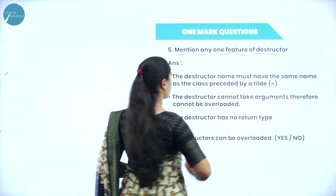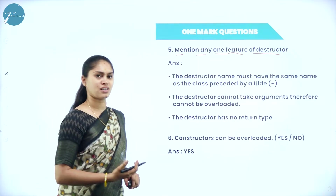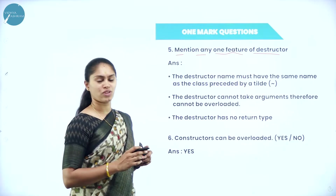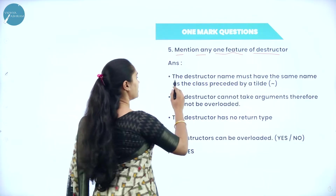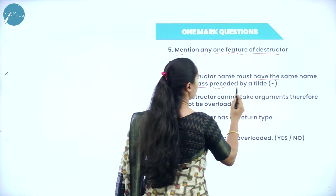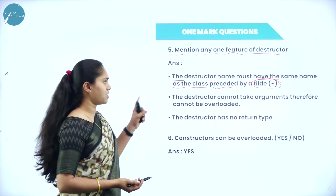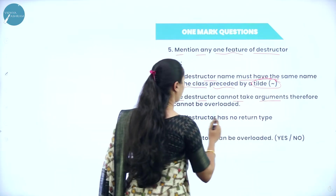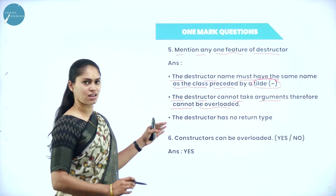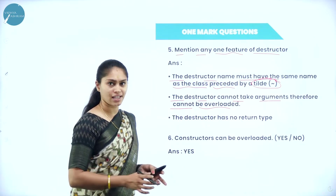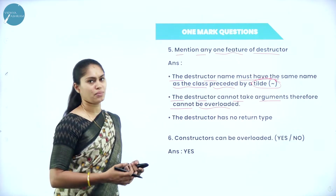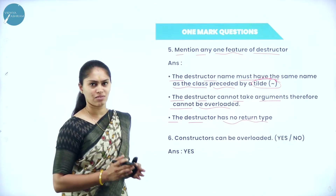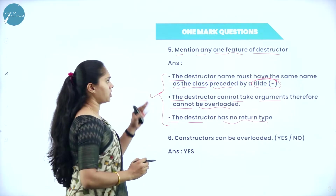Next, mention any one feature of destructor. The destructor name must have the same name as of the class, which must be preceded by tilde symbol. Next, destructor cannot take arguments, therefore cannot be overloaded. That is also one of the features. The default destructor will not take any arguments or parameter. If it is not taking arguments then we can't do overloading. Also, destructor has no return type — no data type will be associated with this destructor. Out of these points you can write any one in order to get one mark.